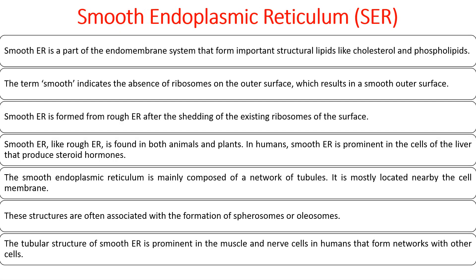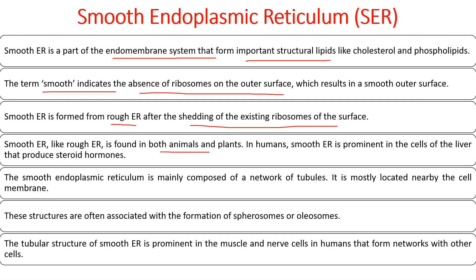Smooth ER is also a part of the endomembrane system, important for lipid, cholesterol, and phospholipid synthesis. The term 'smooth' indicates no ribosomes, so its surface looks smooth. SER is formed from rough ER after ribosomes shed from the surface. It is found in both animal and plant cells. In humans, SER is prominent in liver cells and cells that produce steroid hormones. SER is mainly composed of tubules with few cisternae, located near the plasma membrane, and is associated with the formation of spherosomes or oleosomes — lipid-containing vesicles. The tubular structure of SER is prominent in muscle and nerve cells.